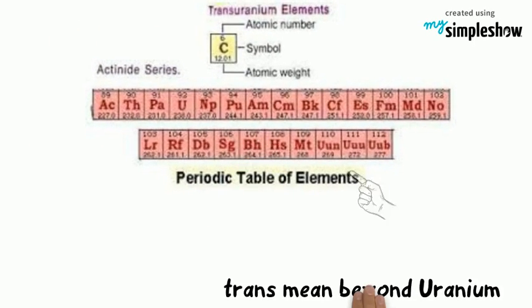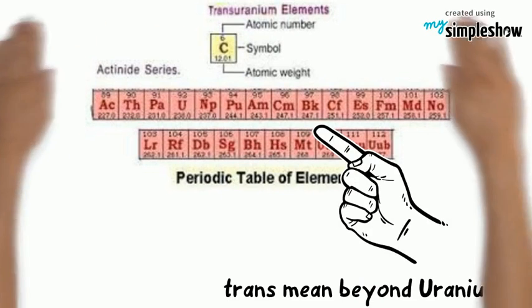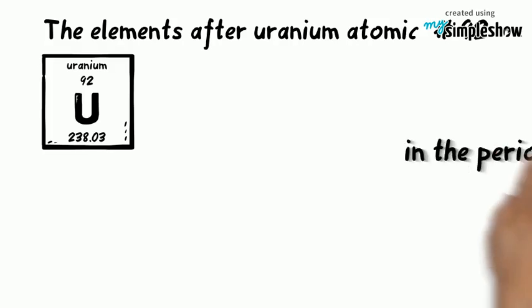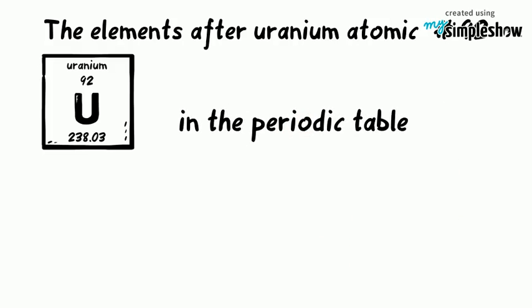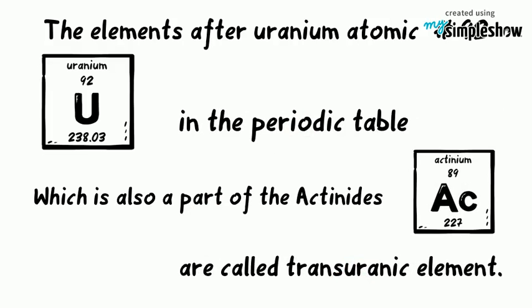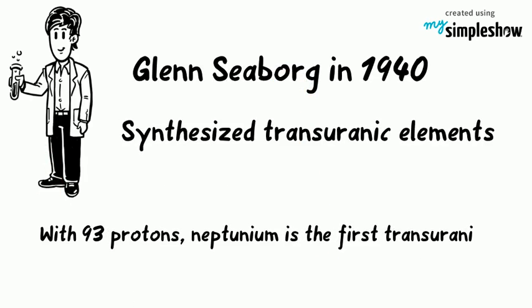Transuranic elements — 'trans' means beyond — are the elements after uranium, atomic number 92, in the periodic table. They are also part of the actinides. Glenn Seaborg in 1940 synthesized transuranic elements.